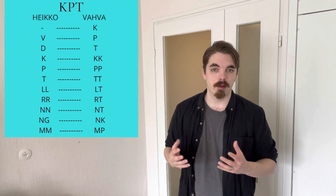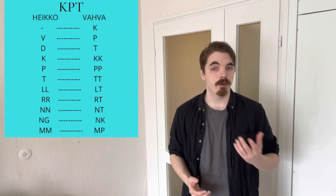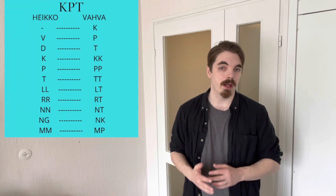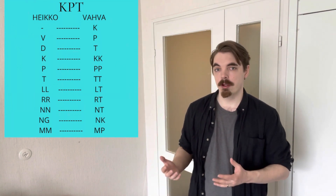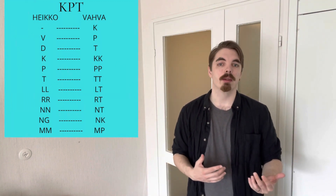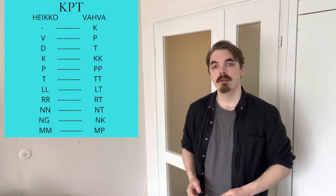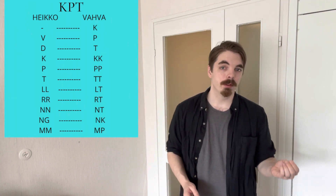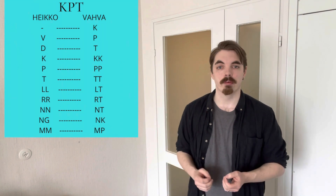Next we're going to look at verb type 3, because in type 2 we don't apply consonant gradation at all. In type 3 we do the opposite of type 1 and change weak to strong — so a weak K would become a strong double K, for example.